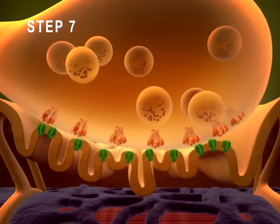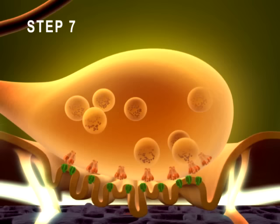Step 7: Once the membrane potential reaches a threshold value, an action potential propagates along the sarcolemma.